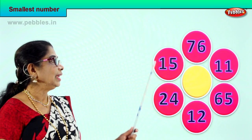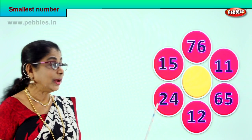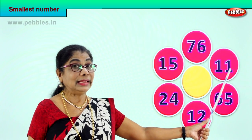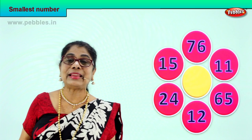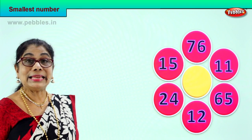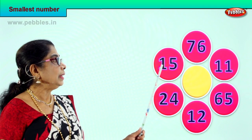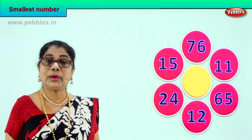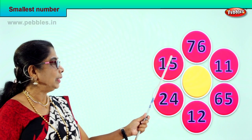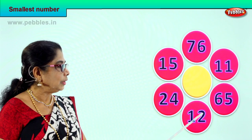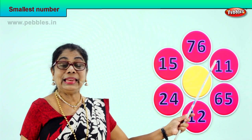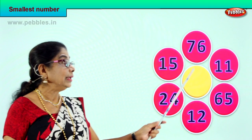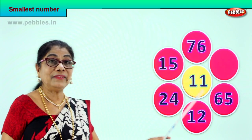Let's take another exercise. 15 has 1 ten, 24 has 2 tens, 12 has 1 ten, 65 has 6 tens, 11 has 1 ten, 76 has 7 tens. The least number of tens is 1 ten — and we have three numbers with 1 ten: 15, 12, and 11. Let's look at the ones place. 15 has 5 ones, 12 has 2 ones, and 11 has only 1 one. So 11 — 1 ten and 1 one — is the smallest of all the numbers. We put 11 in the middle.